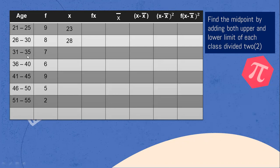Continuing with midpoints: 31 plus 35 is 66 divided by 2 equals 33. 36 plus 40 is 76 divided by 2 equals 38. 41 plus 45 is 86 divided by 2 equals 43. 46 plus 50 is 96 divided by 2 equals 48. And 51 plus 55 is 106 divided by 2 equals 53. That completes step one — finding the midpoint by adding the upper and lower limit of each class divided by 2.